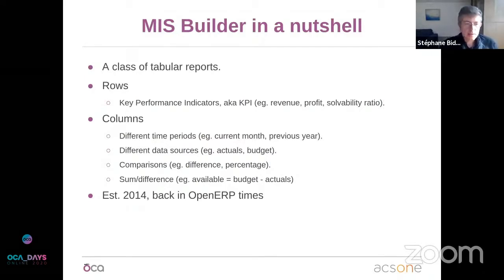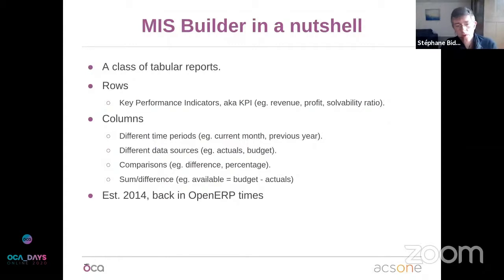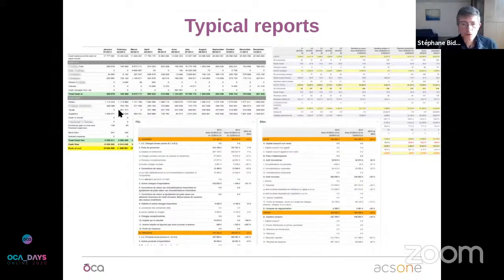MIS Builder has existed since 2014, starting with OpenERP 7. Over time it has had many different contributors, so it's not just us maintaining it, and that's really a good thing. We are trying to keep it on feature parity across different Odoo versions. Currently it's maintained from version 10 to 13. Migration to version 14 is already well underway. These are examples of reports — you see the different rows and columns with different time periods, and you can put styles with colors and fonts.